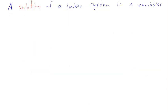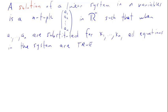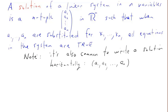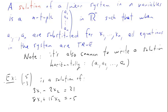A solution of a linear system in n variables is an n-tuple in ℝⁿ — in other words, a vector in ℝⁿ — such that when a1 down to an are substituted for x1 down to xn respectively, all the equations in the system are true. Note that it's common to write a solution horizontally as (a1, …, an). For example, (5, negative 3) is a solution of the following system.